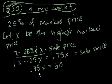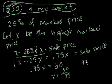So going back to how we did these problems before, we just divide both sides by 0.75. And we say that the highest marked price that I can afford is 50 divided by 0.75. And let's figure out what that is.